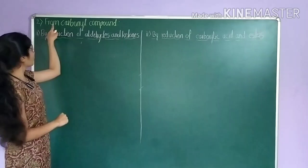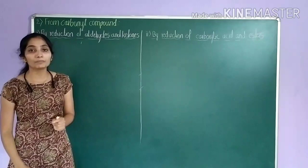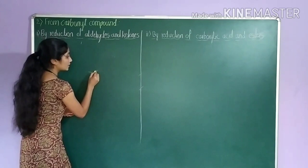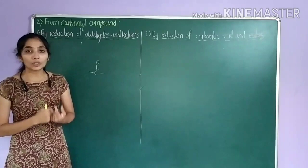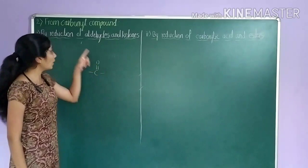The first method is from carbonyl compounds. What is a carbonyl compound? Any compound that contains a C double bond O group is called a carbonyl compound. It may be either aldehydes, ketones, carboxylic acids, or esters. So now first we are learning preparation of alcohols by reduction of aldehydes and ketones.